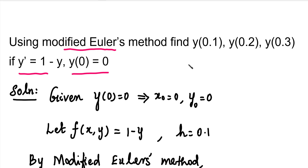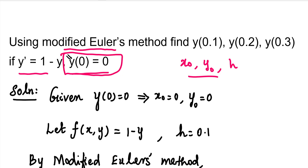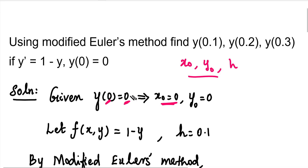In this formula, we will use x0, y0, and h values. We will use x0 and y0 in every question. If you have an initial condition, the left-hand side bracket gives you the x0 value, and the right-hand side gives you the y0 value.